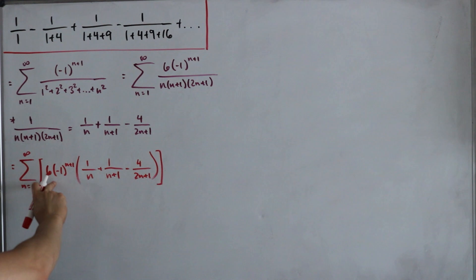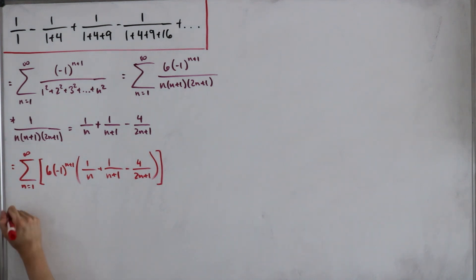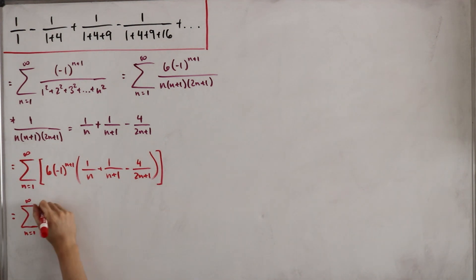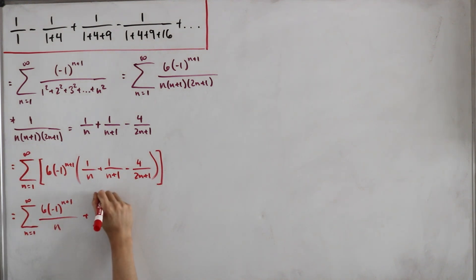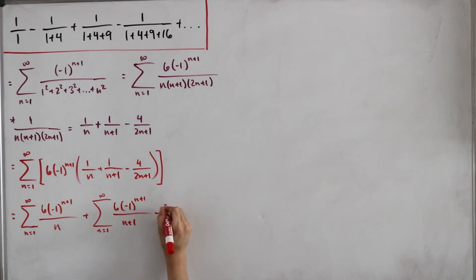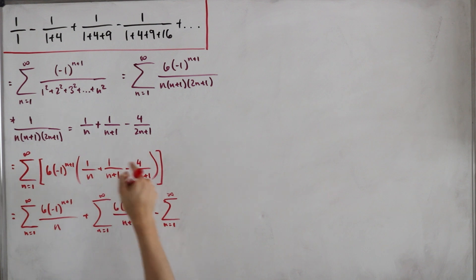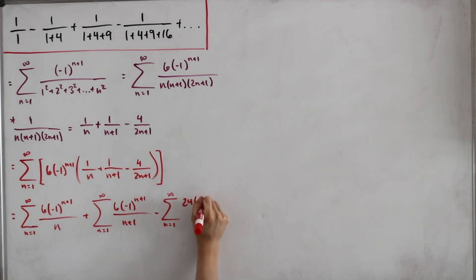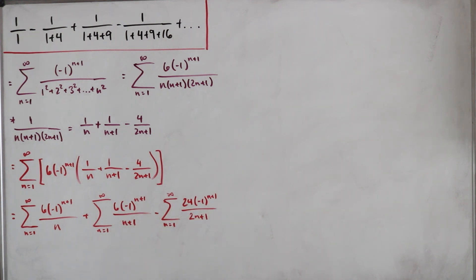Now we distribute the factor 6·(-1)^(n+1) into each term. This gives us a sum of three infinite sums: the first is Σ 6·(-1)^(n+1)/n, the second is Σ 6·(-1)^(n+1)/(n+1), and the third is Σ 24·(-1)^(n+1)/(2n+1), which we subtract.